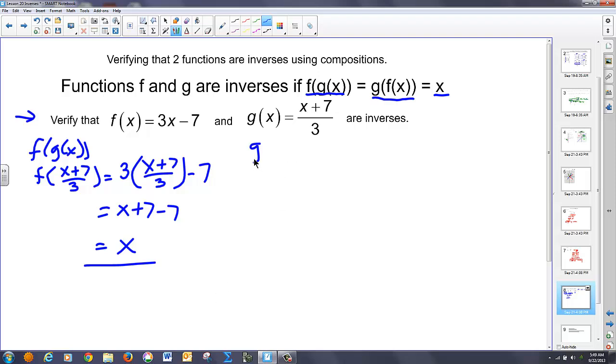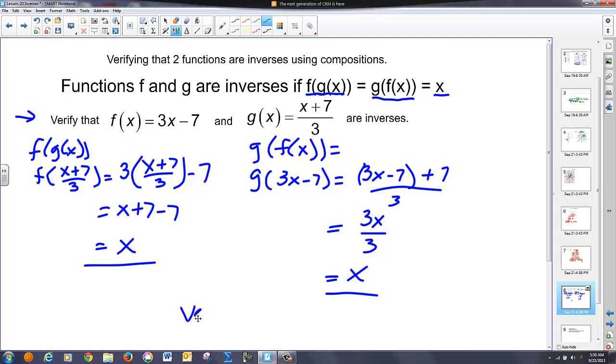Now we're going to find g of f of x, which is the same as g of 3x minus 7. So I look at the g function, and that's 3x minus 7 plus 7 over 3, which gives me 3x over 3 or x. Since f of g of x was equal to x and g of f of x is equal to x, I've verified this.